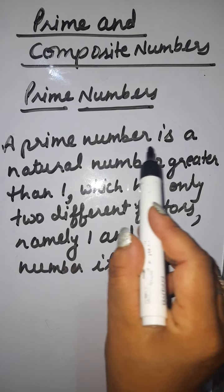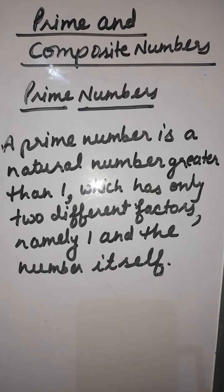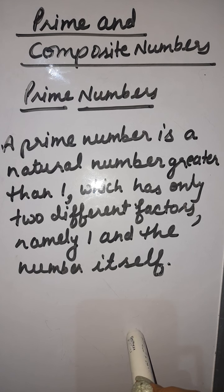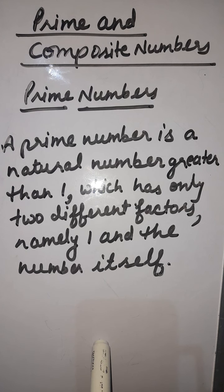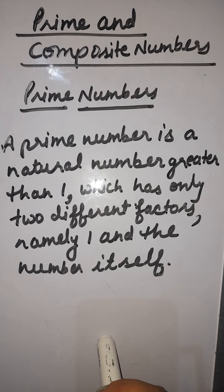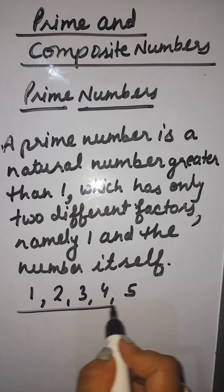So coming back to prime numbers: a prime number is a natural number greater than 1. Natural numbers are 1, 2, 3, 4, 5, 6, 7, 8, 9, 10 and so on. Prime numbers are also natural numbers but greater than 1, and they must have only 2 different factors — one factor is 1 and the other is the number itself.